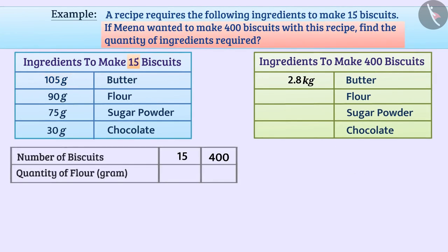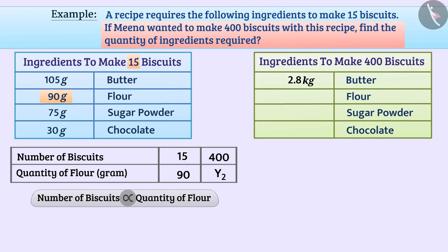We can show the relationship between the number of biscuits and the quantity of flour in this way. Now suppose the required quantity of flour to make 400 biscuits is y2. Since the number of biscuits and the quantity of flour is directly proportional, 15 divided by 90 is equal to 400 divided by y2.